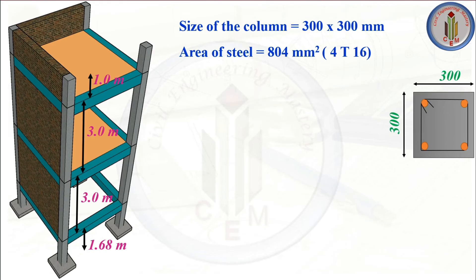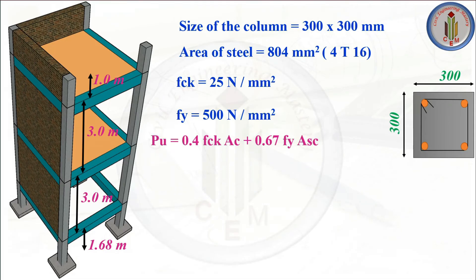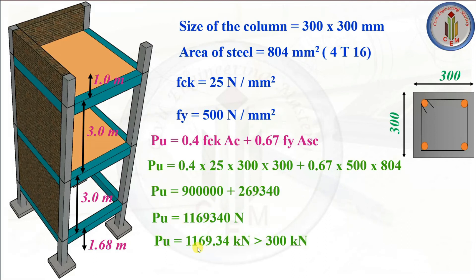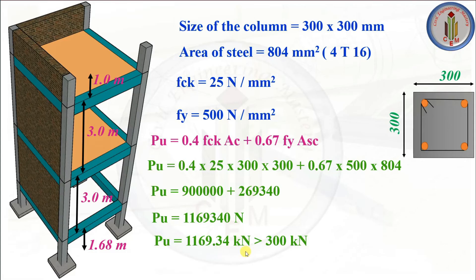Now let's calculate the actual load carrying capacity of the column with the chosen 300 × 300 mm section and 4-16 mm bars. Applying all values into the IS 456-2000 formula, the load carrying capacity comes to 1169.34 kN — far greater than the factored load of 300 kN. This confirms the section is adequate.